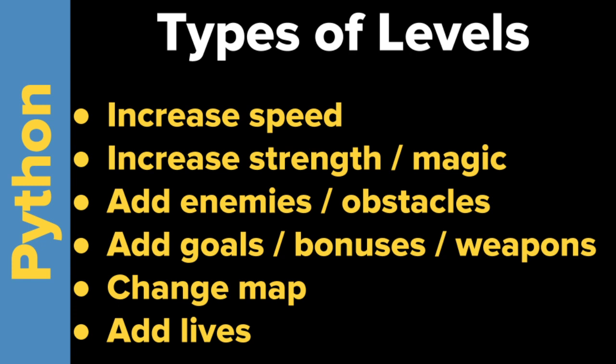You could add goals, bonuses, and stronger weapons — very typical in RPGs. A very common thing is to change the map, like in Pac-Man or Donkey Kong, where you finish level one and go to the next screen. You might get an extra life at level two or level three. If it's chess, you might just increase the power of the AI and give it more processing time.